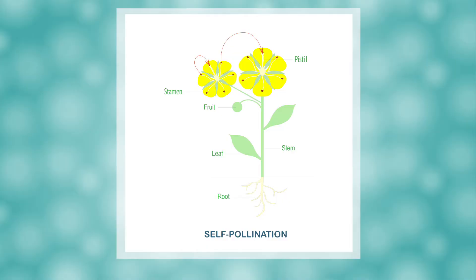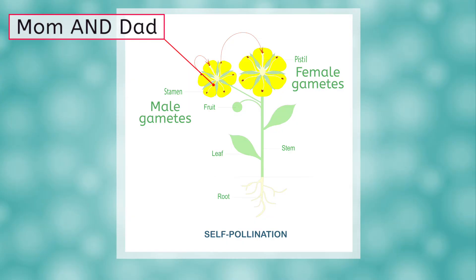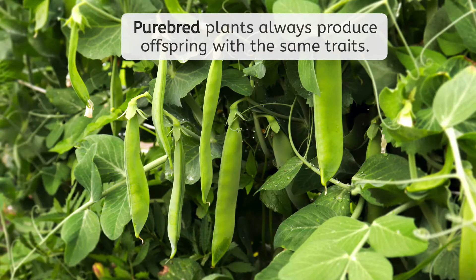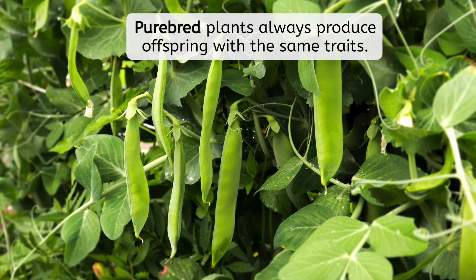Most pea plants, like other types of plants, reproduce by self-pollinating. A single plant produces both male and female gametes so that both parents are actually the same plant. The pea plants Mendel began studying had already been reproducing like this for many generations. They were known as purebred and always produced offspring with exactly the same traits. Mendel called these purebred plants his parent generation, often abbreviated with a P on diagrams.